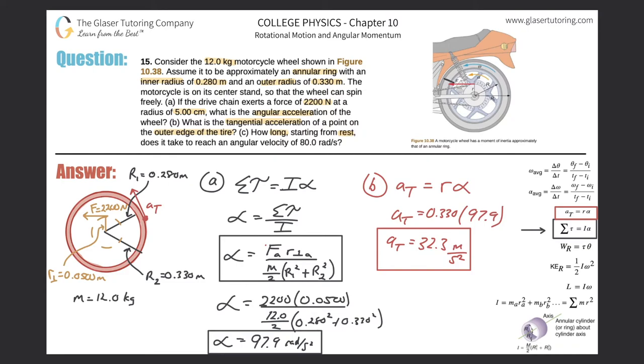Alright, last one. How long, starting from rest, does it take to reach an angular velocity of 80 radians per second? So now when you're asked a question like this, this is basic kinematics. It's rotational kinematics, but at the heart of it, the essence of it is kinematics. And sometimes what's easier is if you think about this in terms of linear kinematics. So they're asking you for the time. We're starting from rest. That means the initial velocity is zero. And it wants us to find the final velocity - how long does it take to reach? So this is a final velocity of 80. And what else do we know? We also know the angular acceleration, which is 97.9. So how would you calculate time if you knew these values? You might say, oh right, I remember that formula. That formula was V_f equals V_i plus a times t.